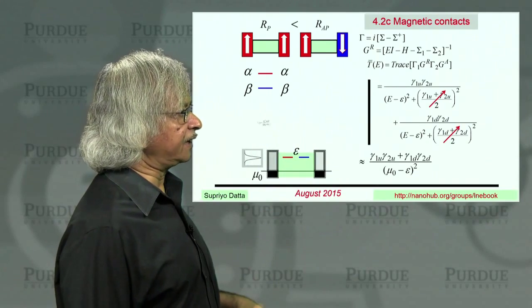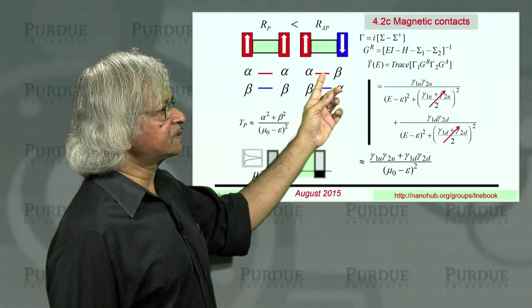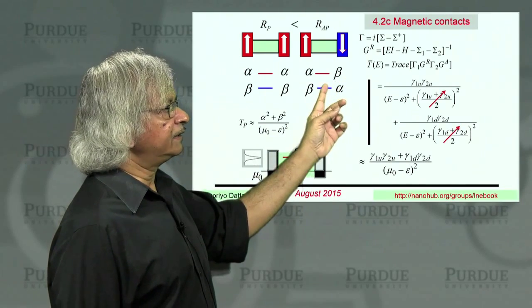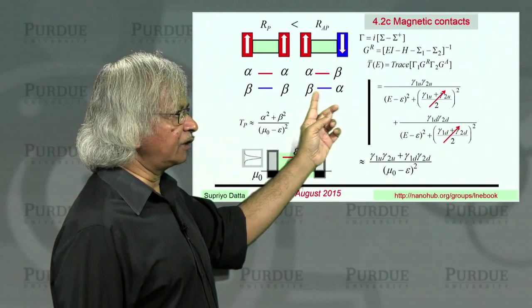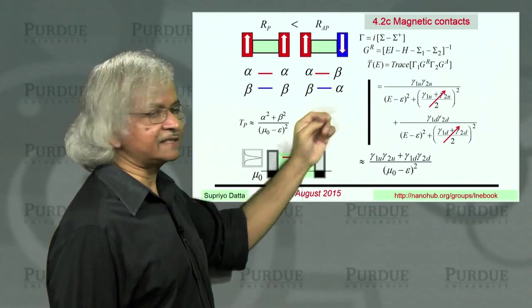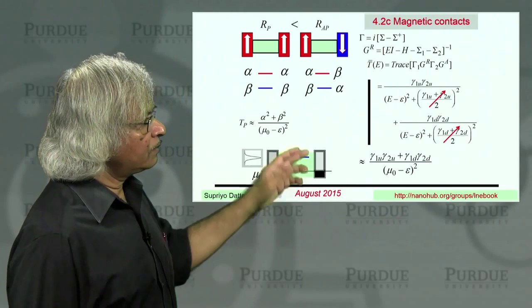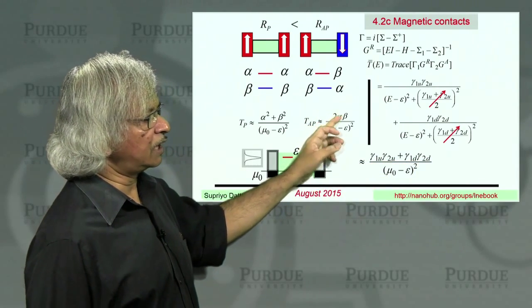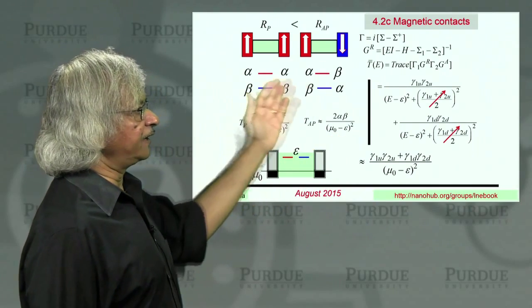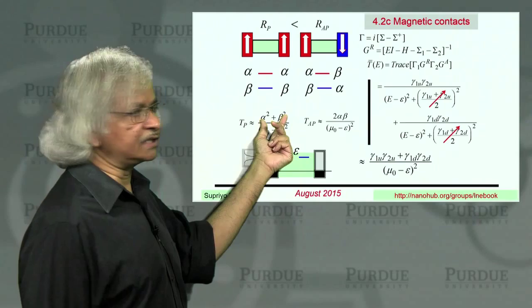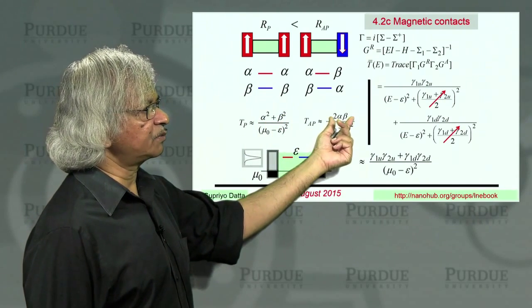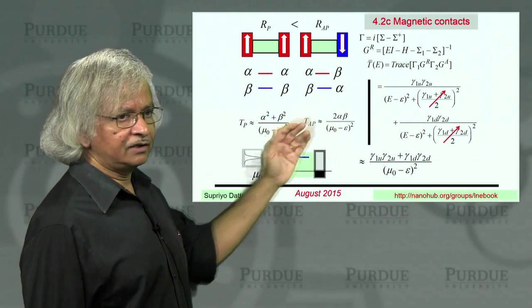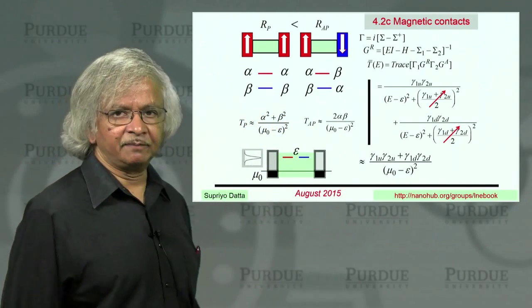Now we go to the anti-parallel case. In the anti-parallel case, you see the upspin channel goes out here very easily. That's alpha, but has a tough time going out there. So that's beta. This one has a tough time getting out on this side, but can get out on this side much more easily. So that's alpha. Now, when you put those numbers in here, you'd get alpha times beta plus beta times alpha. So that's like 2 alpha beta. So what this tells you then is that the parallel transmission will be proportional to alpha squared plus beta squared, and the anti-parallel transmission is proportional to 2 alpha beta. And what we can show is that this is always bigger than that, so that the parallel transmission is bigger than the anti-parallel transmission, and so the resistance is lower.